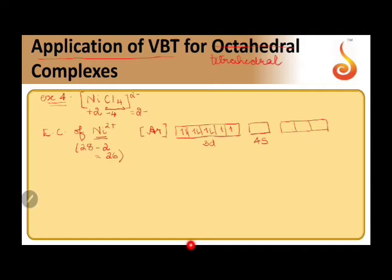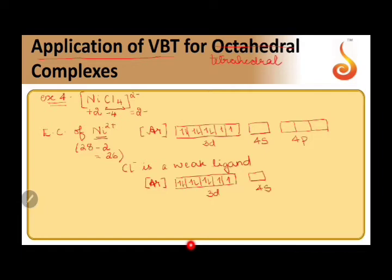If required we can go further and use 4d. Chloride here is a weak ligand. Because of this Hund's rule is obeyed. The electrons are not pushed to make space for the electrons donated by ligands. Therefore the electronic configuration can be written as - these electrons should be left untouched and empty orbitals should be taken.